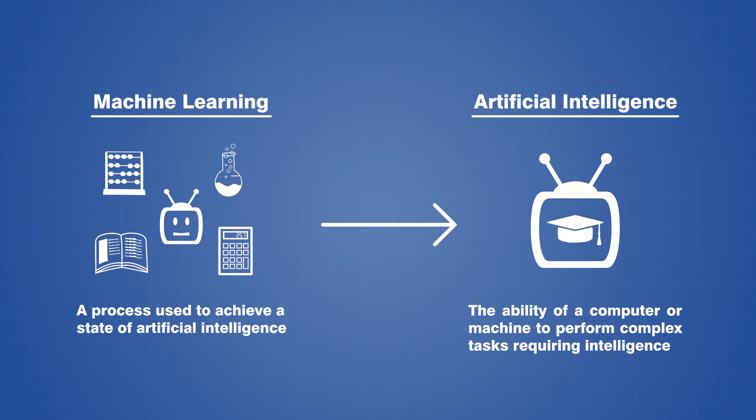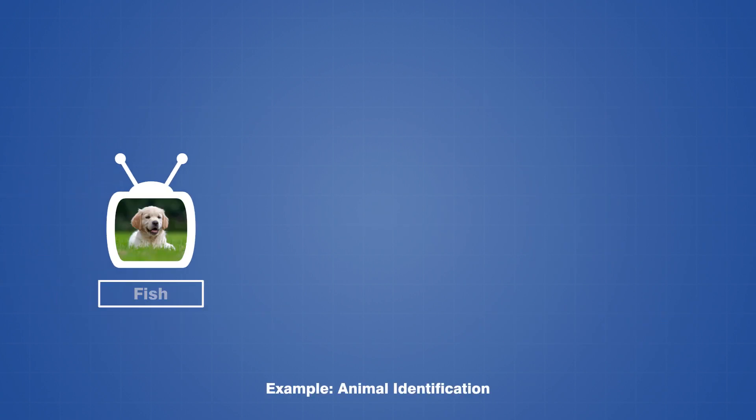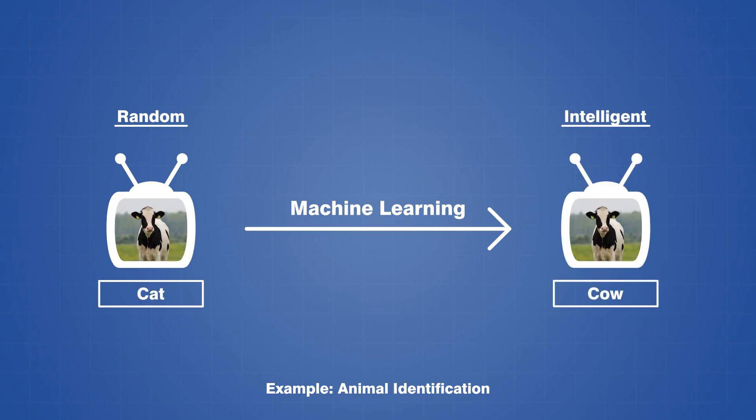To create artificial intelligence, you first need some type of machine, program, or bot that is capable of performing a specific task, albeit quite randomly in the beginning, and a machine learning algorithm is then used to teach the bot how to perform the task in an optimized way.